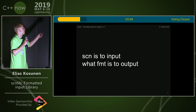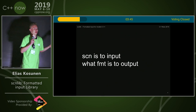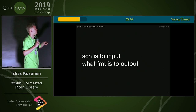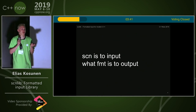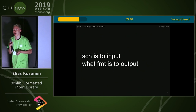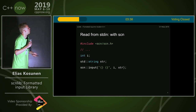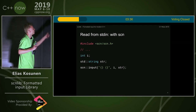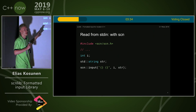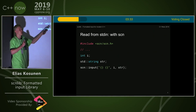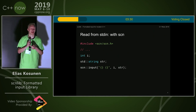So I have, like, a bold statement: SCN is to input what FMT is to output. I don't know if that's true, but whatever. Some of you may recognize this syntax from FMT, if you use that.